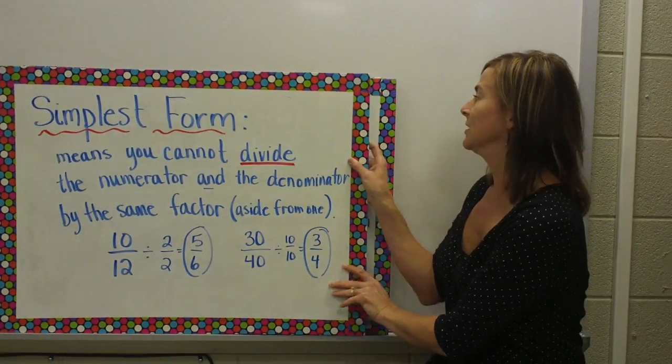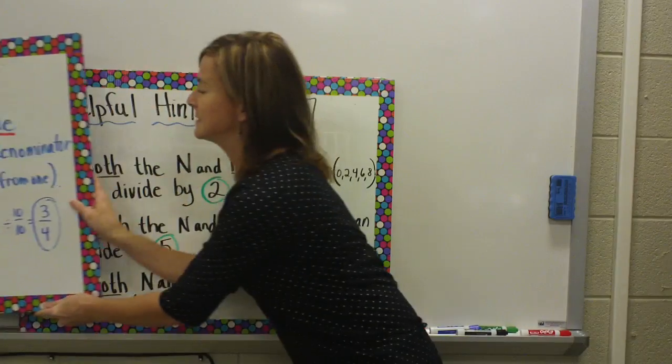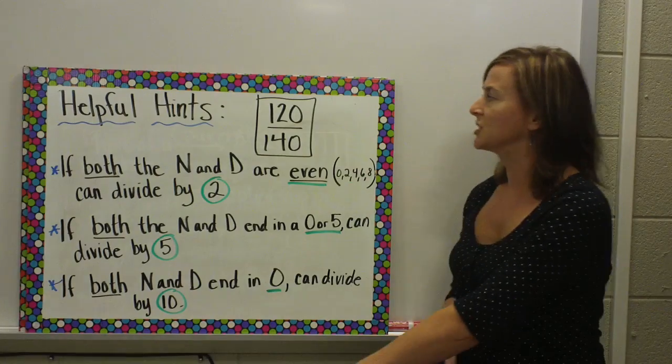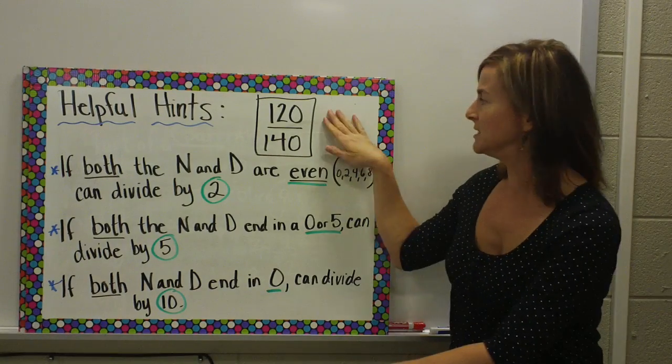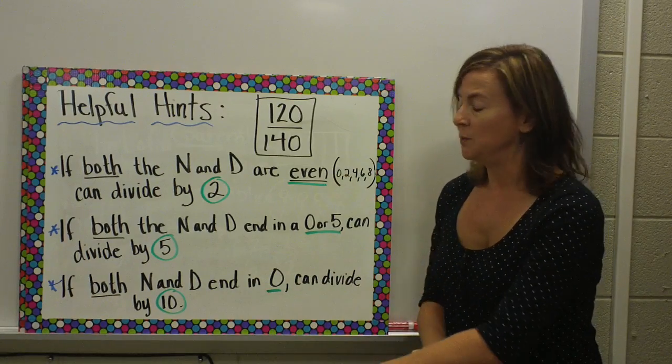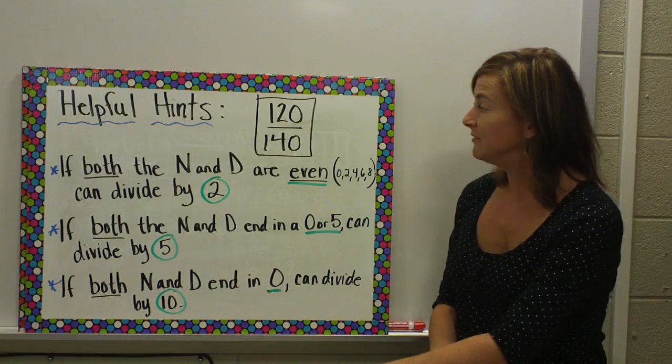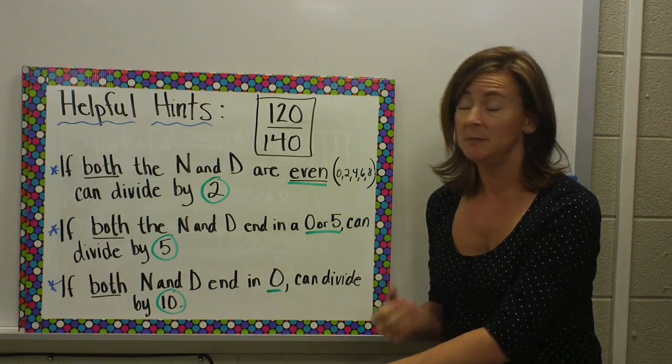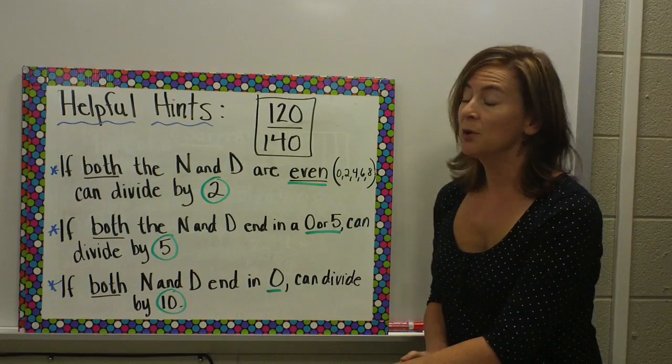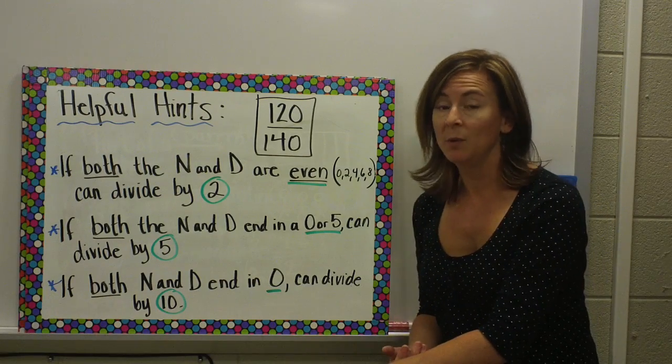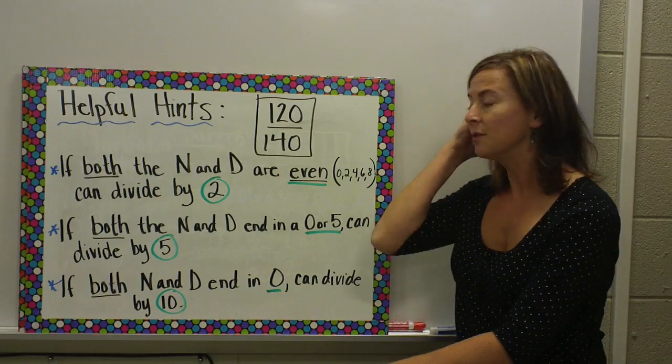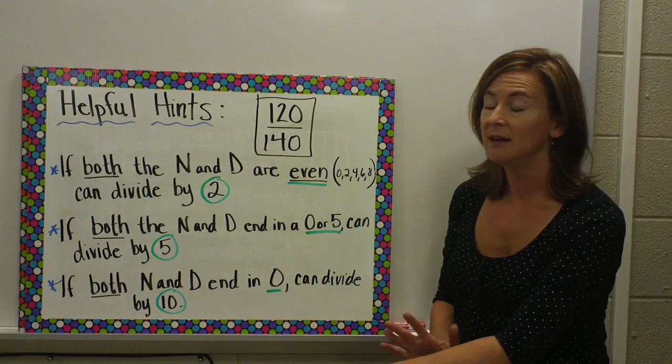Okay, let's take a look at some helpful hints. Let's say I have a fraction that looks a little more intimidating. There are a couple things that you can remember that might help you divide both the numerator and the denominator to get them in simplest form. If you know your multiplication facts, simplifying will be much easier for you. If you struggle with that, here are three divisibility rules that I really like.